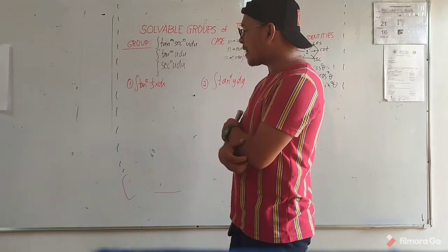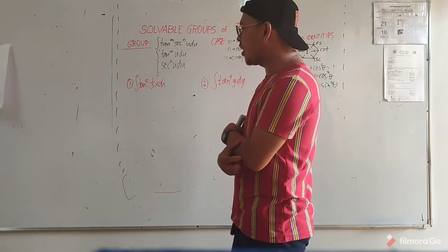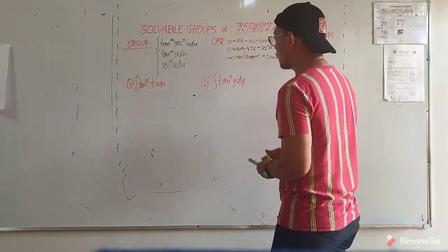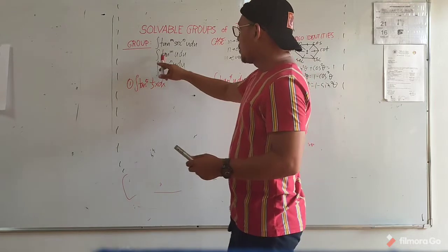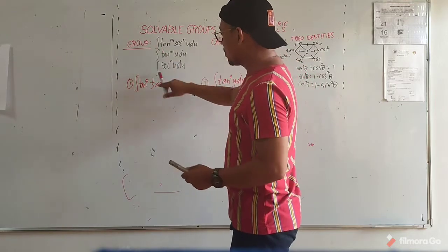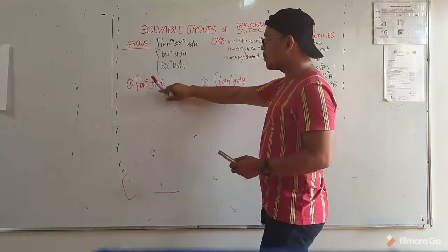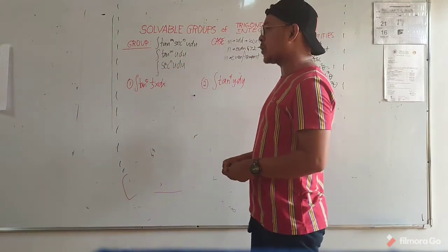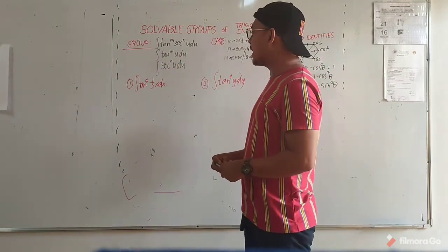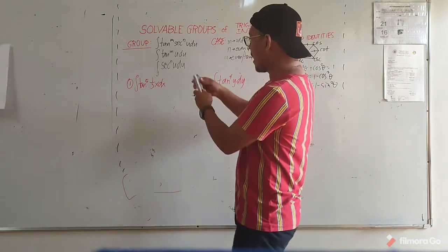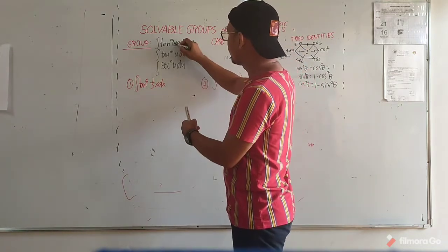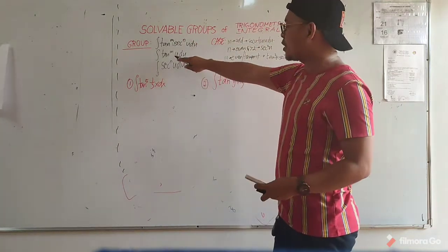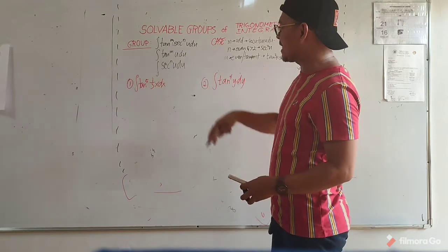Let us solve the integral of tan to the fourth, one-third x. We have this set of groups: the integral of tan raised to n, secant raised to n, du. Tan raised to n, du. And secant raised to n, du.